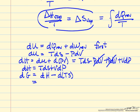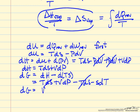so we're making the same type, substitution again. DH is TDS plus VDP minus TDS minus SDT. So the differential change in Gibbs free energy, and again you notice this term cancels, is VDP minus SDT.